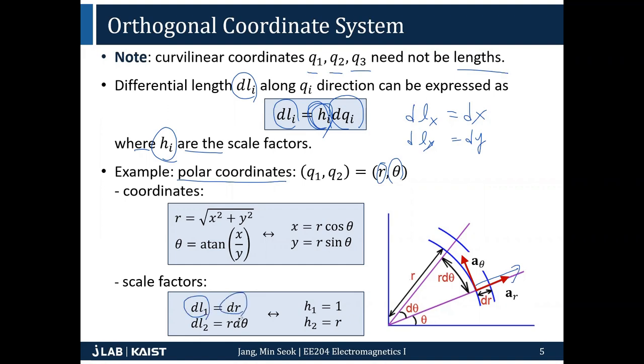In this example, in order to get the infinitesimal length along radial direction dL1, it's just equal to dr. But dL2 is not d-theta. In order to get the length along this direction, you need to multiply r. R d-theta is your infinitesimal length. We call this r as a scale factor. In case of r, the scale factor is 1. In case of theta, the scale factor is r. This becomes important as you move on and try to introduce differential operators, which I will cover in the next lecture.